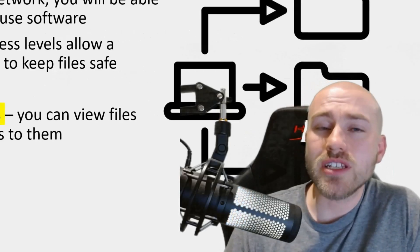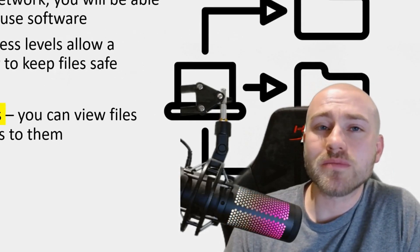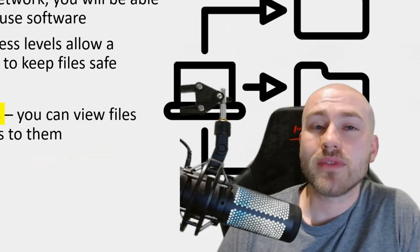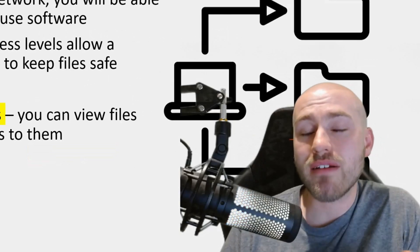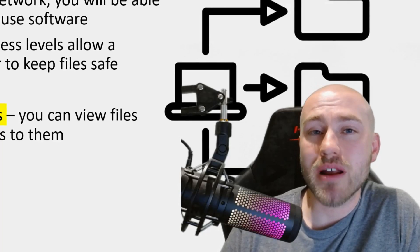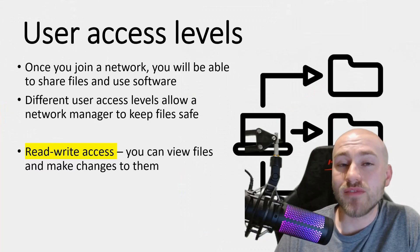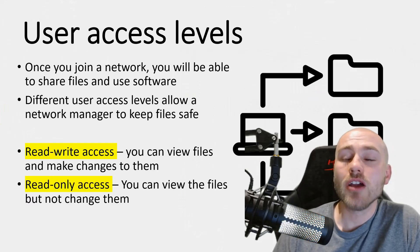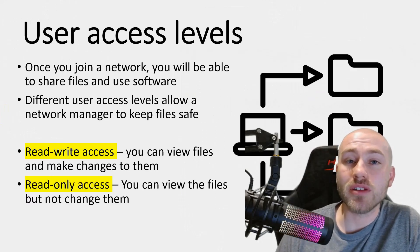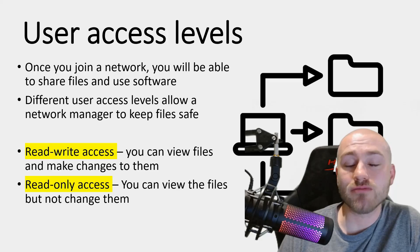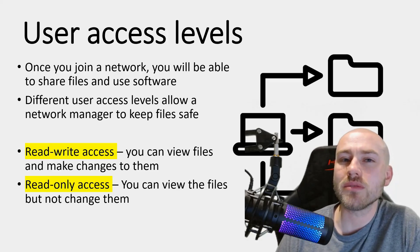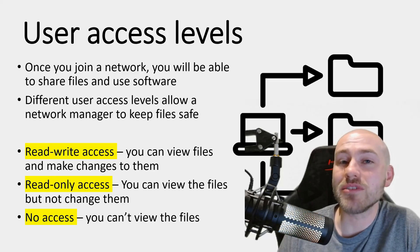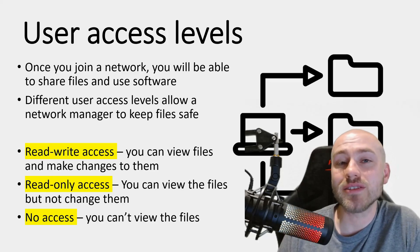There are three different levels of access. The first is read-write access, given to someone high up like the network manager — they can view any files and make changes to them. Read-only access is where you can view and read files but cannot make changes. Finally, no access means you're not allowed to see or do anything to those files.